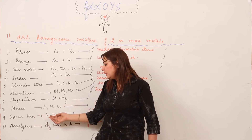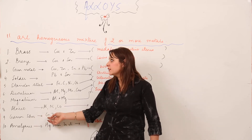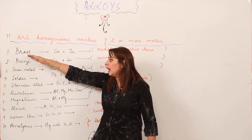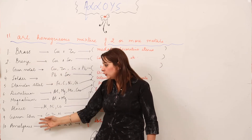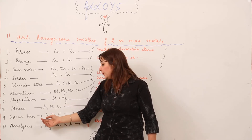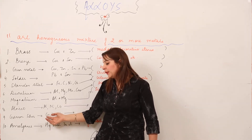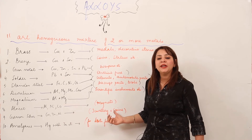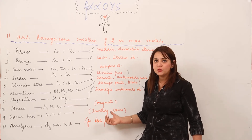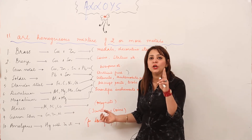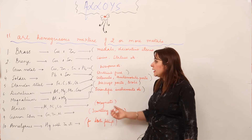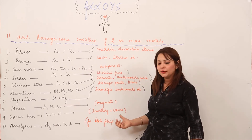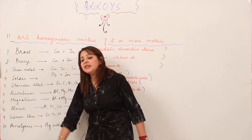Next is German silver, made up of copper, zinc, and nickel. It is the fourth alloy of copper, alongside brass, bronze, and gun metal. German silver is used in making coins and jewelry. So two copper alloys are used for making coins: bronze and German silver.